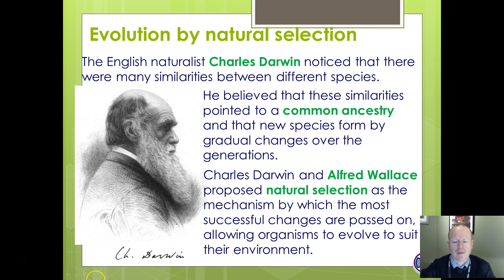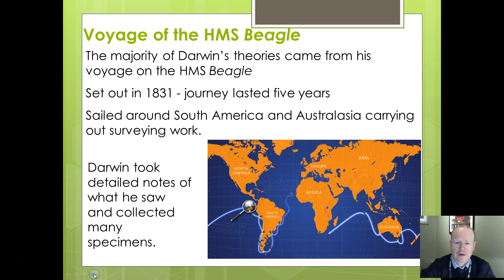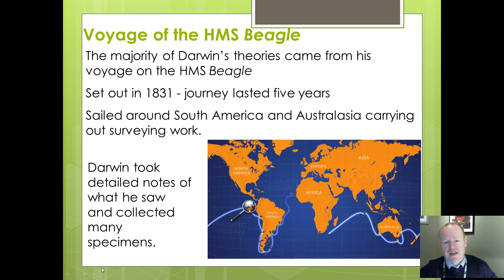They both thought about common ancestry and the idea that changes could be passed on from one generation to the next as organisms change to suit their environment. Where did Darwin get his ideas? Mostly from setting out on a journey.